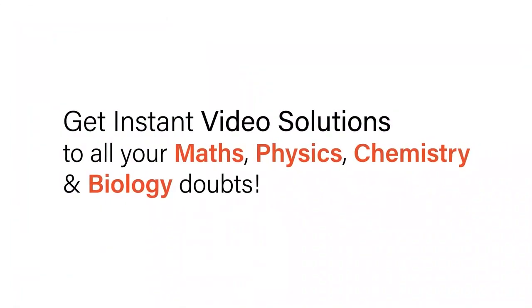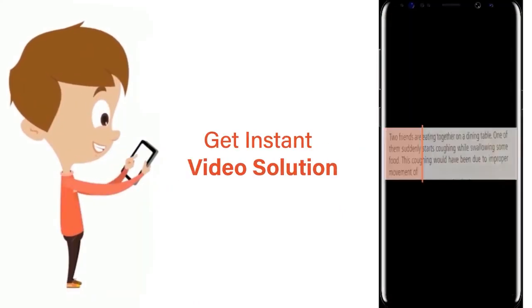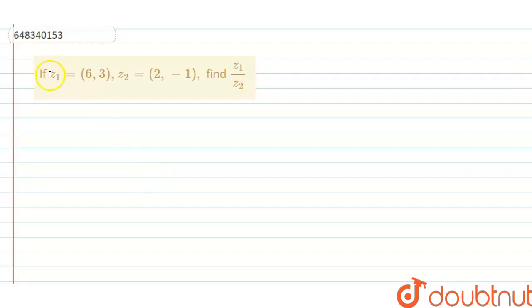With Doubtnet, get instant video solutions to all your math, physics, chemistry, and biology doubts. Just click the image of the question, crop the question, and get instant video solution. Download Doubtnet app today. Hello everyone, here is our question which says that if z1 is 6 comma 3.